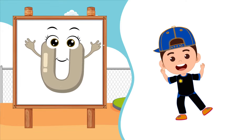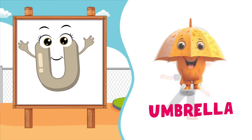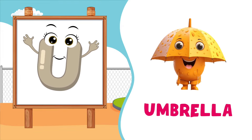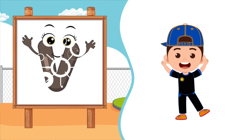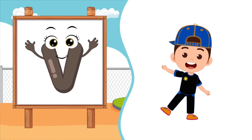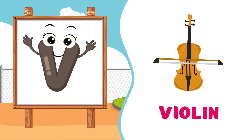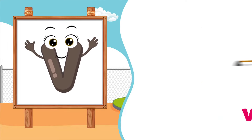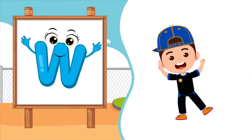U is for Umbrella, U-Umbrella, U-Umbrella. U, Umbrella. V is for Violin, V-Violin, V-Violin. V, Violin. W is for Whale, W-Whale, W-Whale. W, Whale.